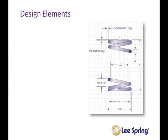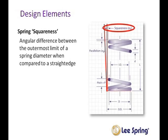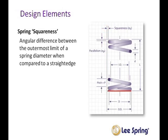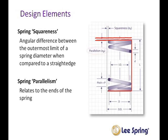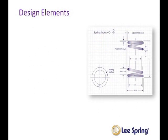Now let's look at other design elements. Spring squareness is defined as the angular difference between the outermost limit of a spring diameter when compared to a straight edge at a right angle to a horizontal flat plate on which the spring is standing. Spring parallelism relates to the ends of the spring and how parallel they are to one another.